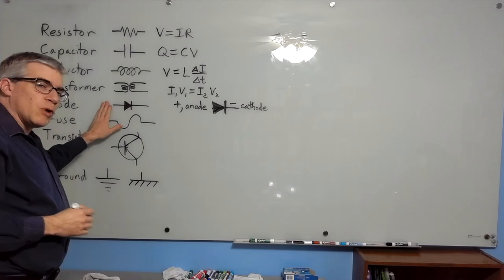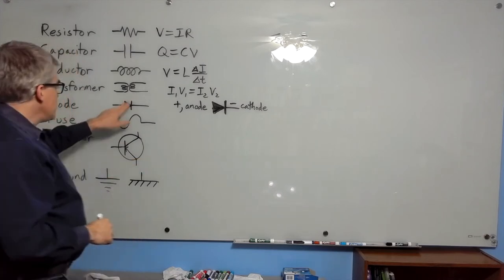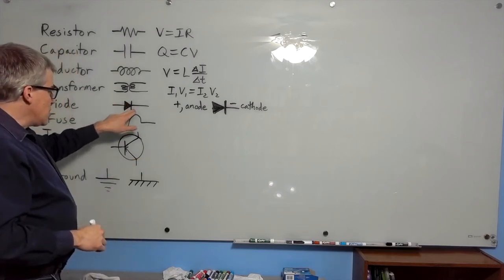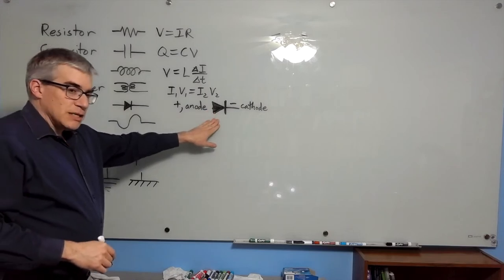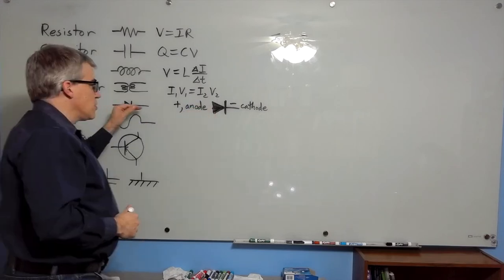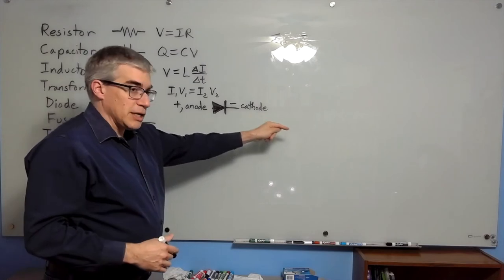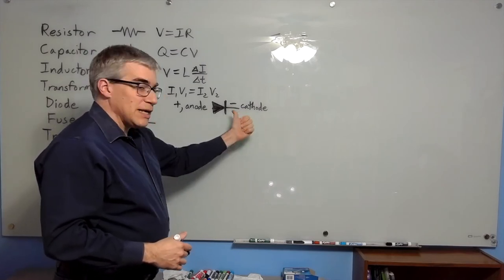A diode is a one-way street for current. This symbol has a triangle and a vertical line. The triangle's the positive side, what we call the anode, and the vertical line's the negative. If you try to run current this way, it goes, but if you try to run it that way, it stops short.